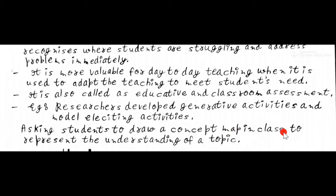Asking students to draw a concept map in class to represent their understanding of a topic. For example, a concept map is like a flow diagram — we have four types of pollution: land, air, water, and noise. Students define each type. This flowchart-type concept map helps the teacher understand the child's comprehension and how much knowledge the student has attained.